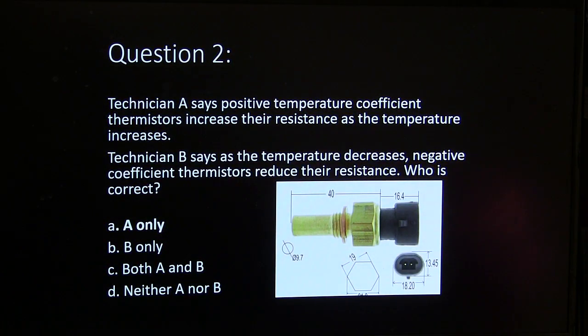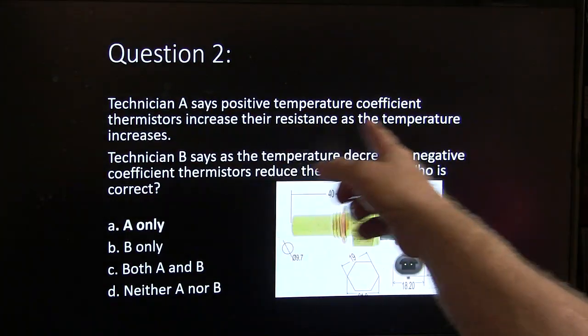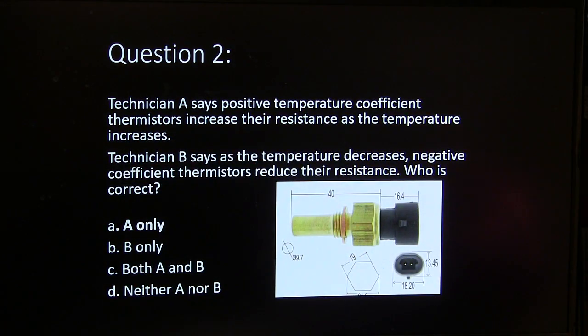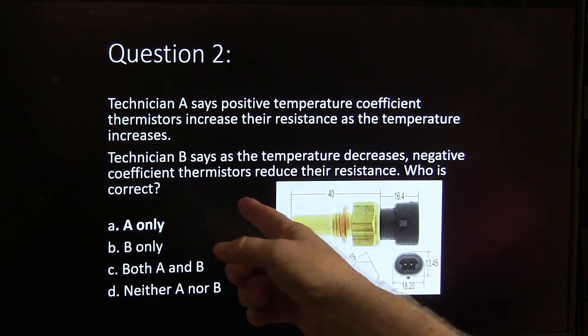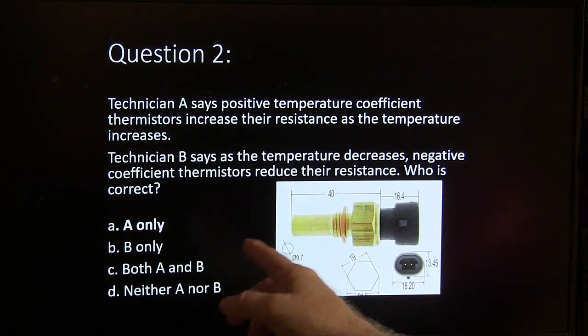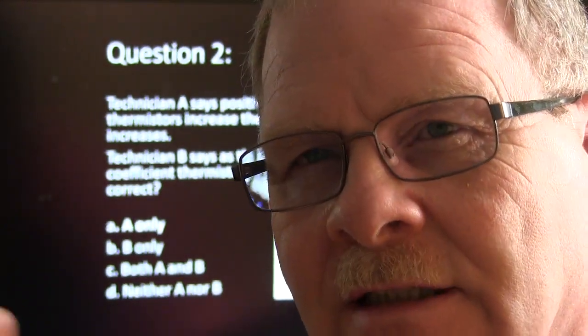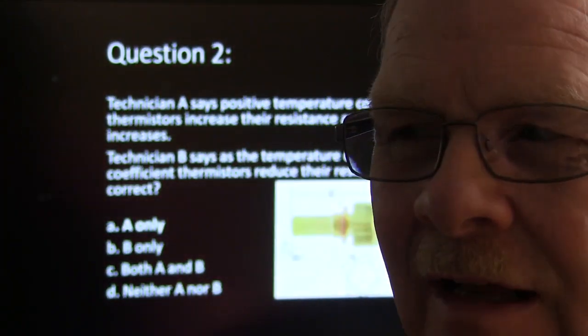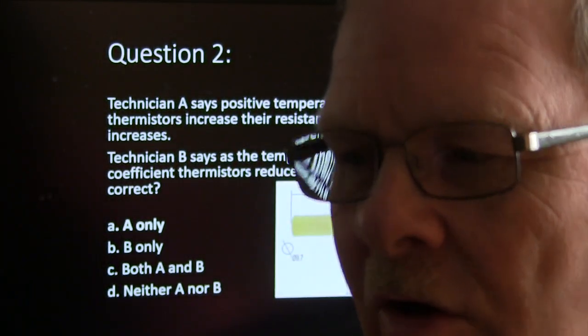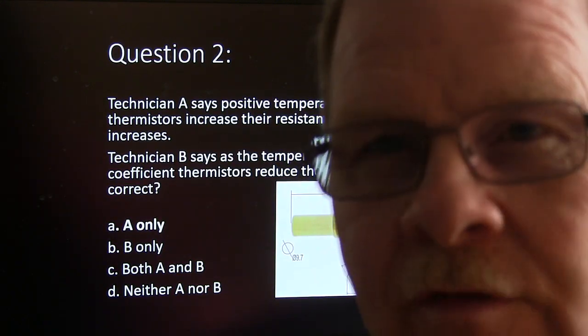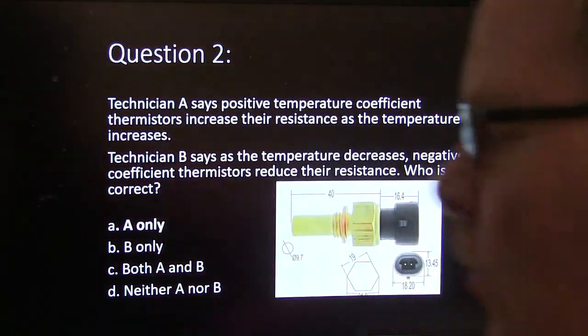Positive temperature coefficient thermistors will increase their resistance as the temperature increases, but negative temperature coefficient thermistors actually get less resistance the hotter they get. The voltage on that sensor — it's got 4.6 volts going to it usually — will drop off as the sensor gets hotter and gets less resistance. So you'll start out with like 3.5 volts on a real cold day and it'll go down to like 0.45 volts when the engine's warm.